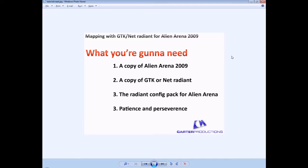I've just noticed this screenshot's broken because it says 1, 2, 3 and 3. The third thing you're going to need is the Radiant config pack for Alien Arena. The links are all posted over in the descriptions on the right-hand side of the video, so grab what you need from there. And finally, number three again: patience and perseverance.